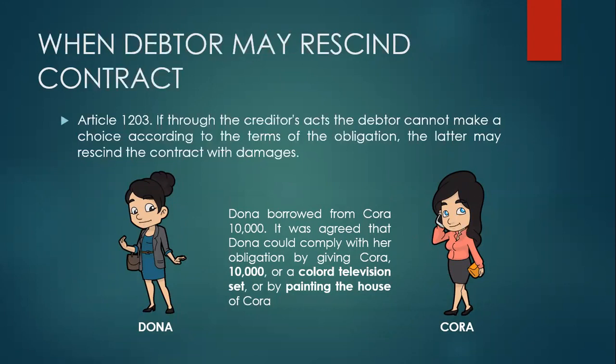When debtor may rescind contract — Under Article 1203, if through the creditor's act the debtor cannot make a choice according to the terms of the obligation, the latter may rescind the contract with damages. Rescission creates the obligation to return the things which were the object of the contract together with their fruits and the price with its interest. It is the very nature of an alternative obligation that the debtor can make his choice without the consent of the creditor. Hence, the right is given to the debtor to rescind the contract and recover damages if, through the creditor's fault, he cannot make a choice according to the terms of the obligation. The debtor, however, is not bound to rescind.